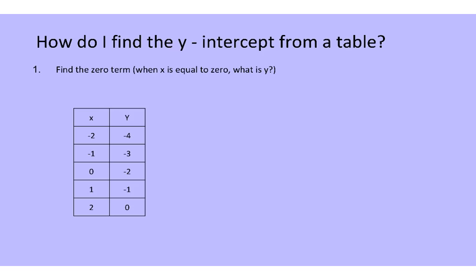Now I've found the slope. How do I find the y-intercept from a table? Remember, the y-intercept will always have a 0 in the x value. So I'm going to look at my table and go down the x's until I find 0. The y value that goes with that 0 is my y-intercept. So my y-intercept for this particular table is negative 2.